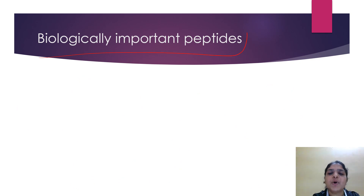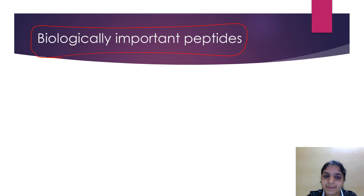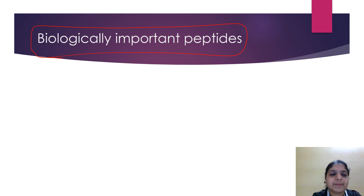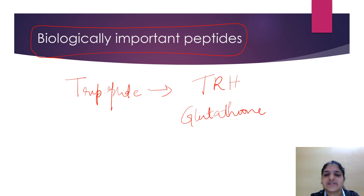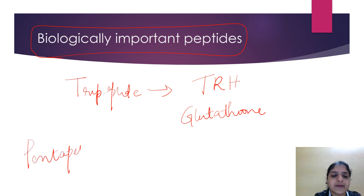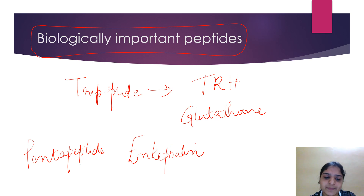Now we will see some biologically important peptides. These peptides help in biological processes in our body. Examples include tripeptides like thyrotropin-releasing hormone and glutathione, and pentapeptides like enkephalin, which is another biologically important peptide.